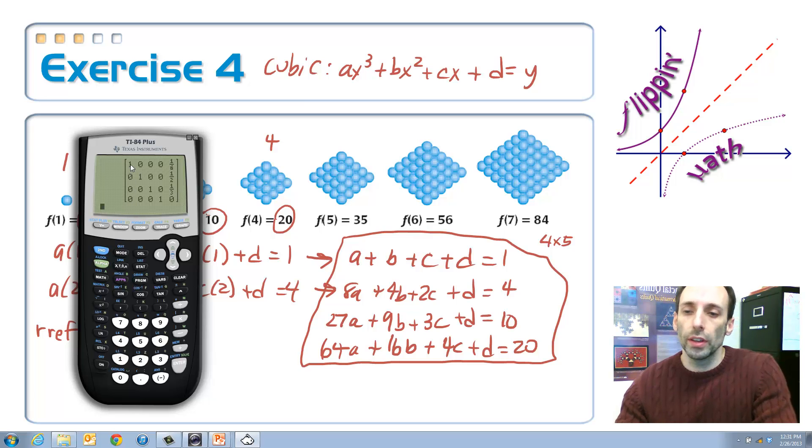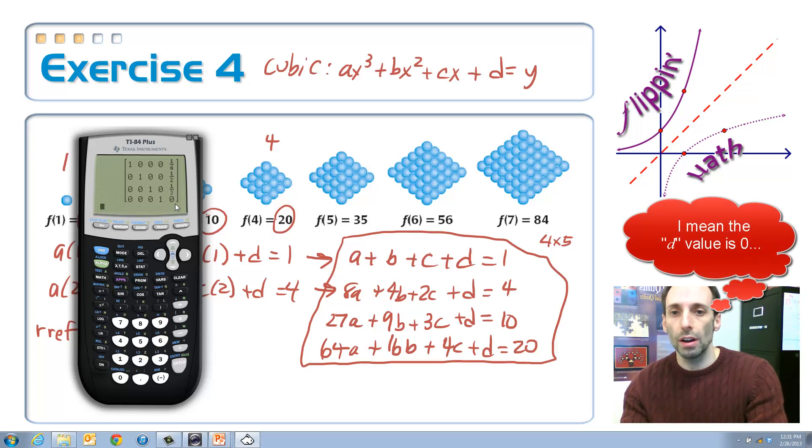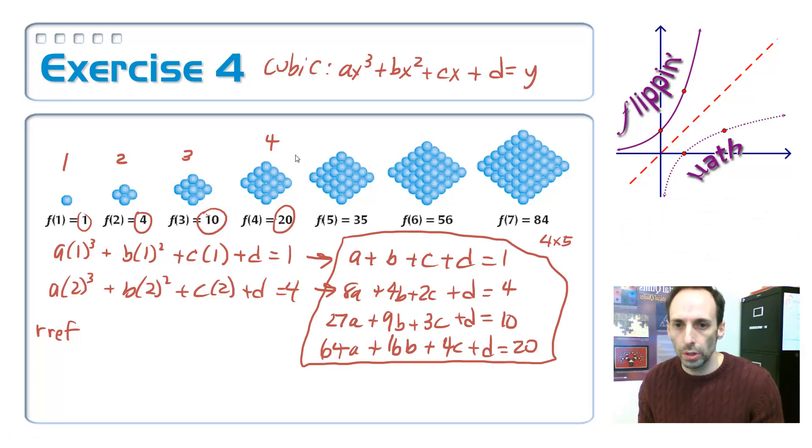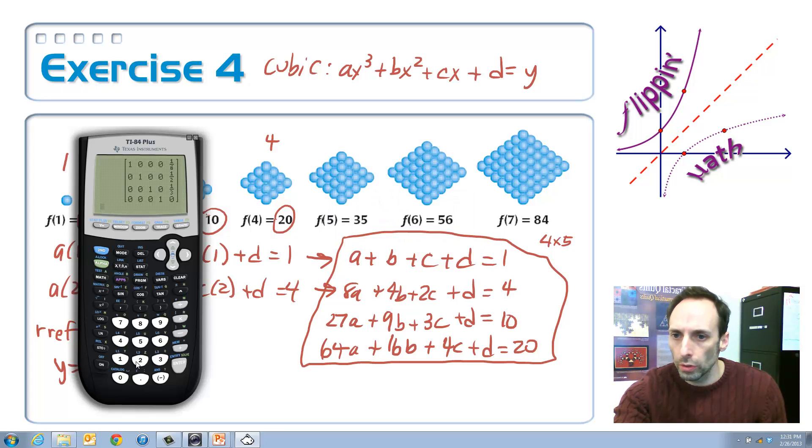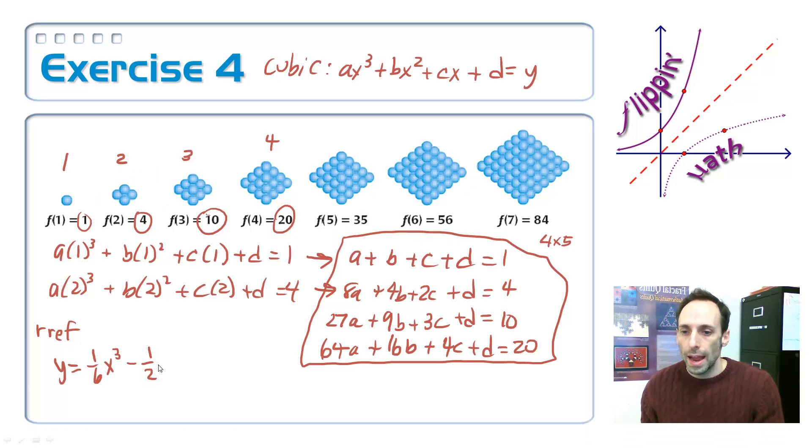From this, it says in this matrix, the A value is equal to 1/6. The B value is equal to 1/2. The C value is 1/3. And then the D value is 0. Let's write our function then, in this form. Y was equal to 1/6 x cubed plus 1/2 x squared plus 1/3 x. So here's the function. I guess I should have put f of x at the front of that.